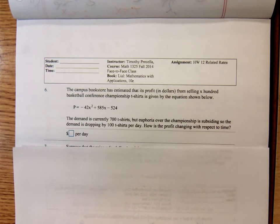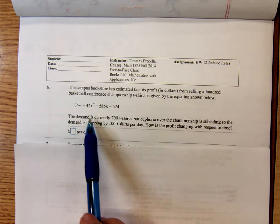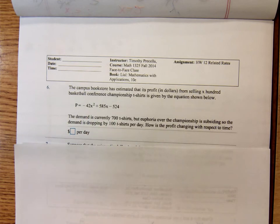A campus bookstore has estimated that its profit in dollars from selling X hundred basketball conference championship t-shirts is given by the equation shown below. The demand is currently 700 t-shirts, but euphoria over their championship is subsiding, so the demand is dropping by 100 t-shirts per day. How is the profit changing with respect to time?